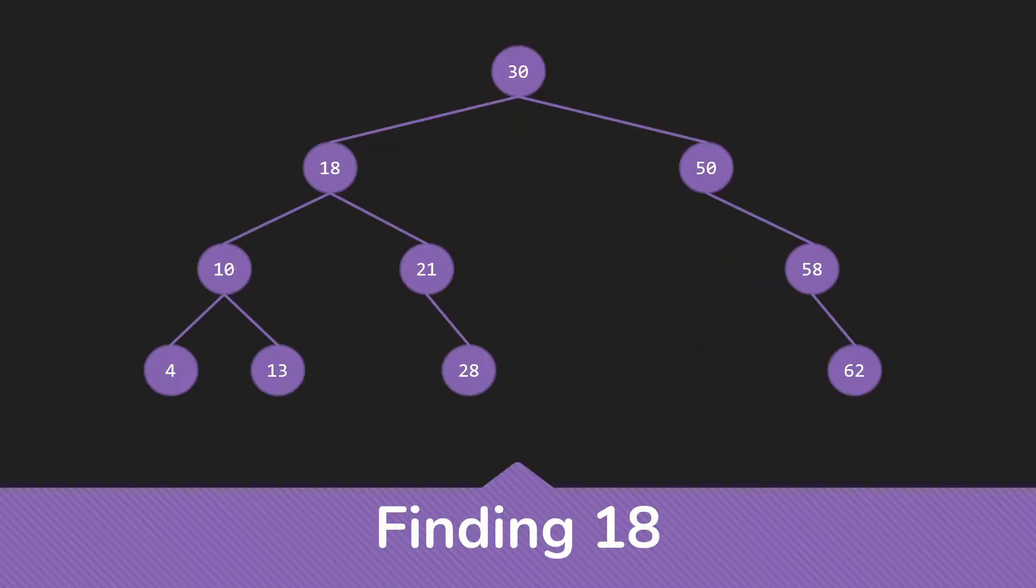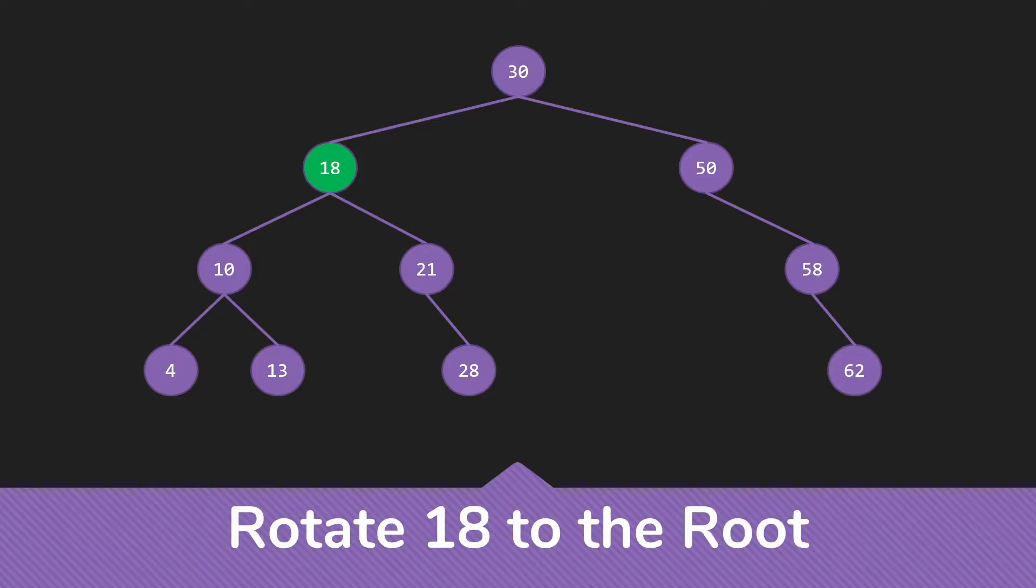So let's start with just finding the 18. We'll do that in the usual way. Now, once we've found the 18, we see that it is one down from the root on the left. So to get the 18 to the root, we're going to rotate it to the right using a single rotation, just like the single rotations that we use for AVL trees.